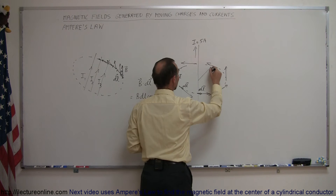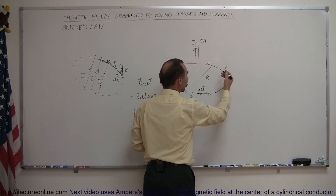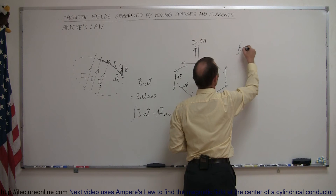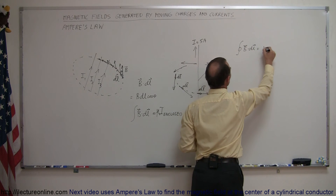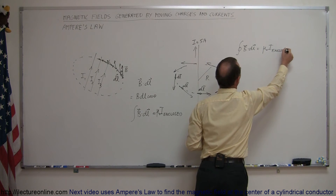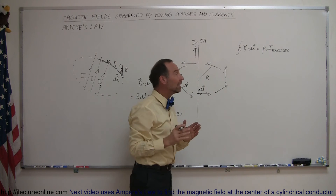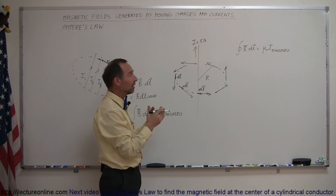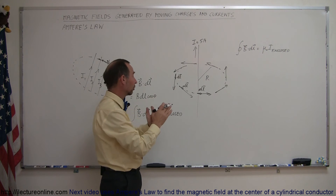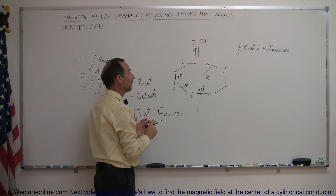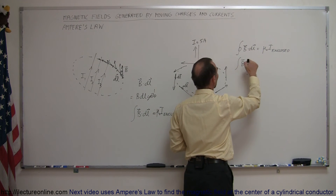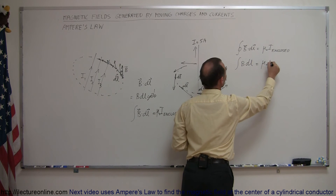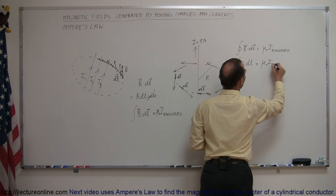Let's say we make that circle with radius R, and we want to find out what the B field is along that line. Using Ampère's law: we take the integral of B dot dl and say that's equal to mu sub naught times I enclosed. Since the B field direction and the line segment direction are parallel, the cosine of the angle between them is zero degrees — cosine of zero is one — so it simply becomes the integral of B times dl equals mu sub naught times I enclosed.